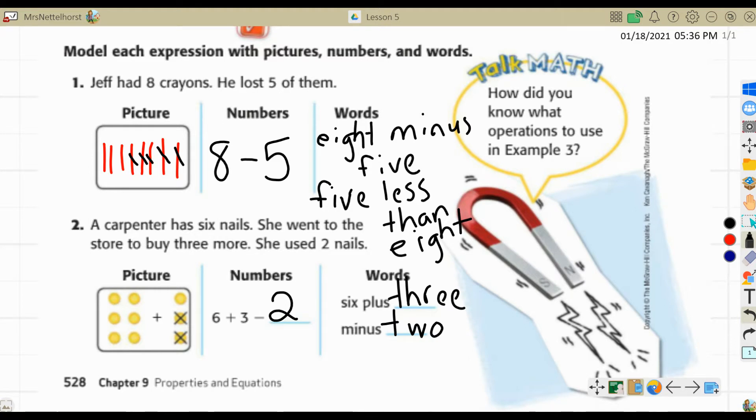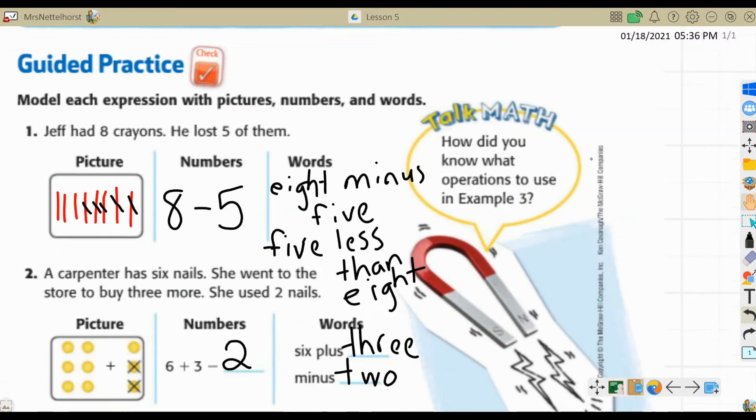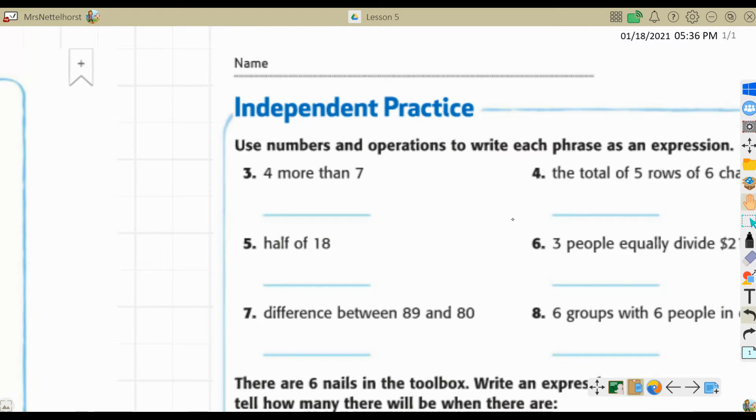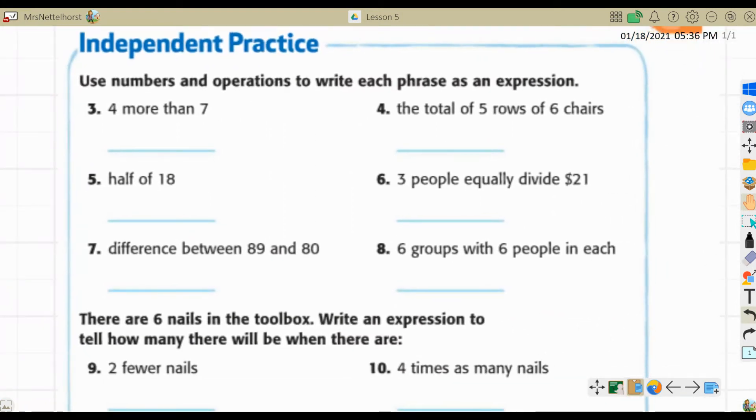Let's go on and look at independent practice. If you're not in my class, and you're not supposed to watch this part, you do not need to watch it. I mean, you can watch it if you want, but my class needs to watch it so you know what I expect of you. Use numbers and operations to write each phrase as an expression. That means there's no equal sign, and you're not going to have a product or a sum or anything like that. You're going to read it, and then you're going to decide what your operation symbol is and write it as an expression on the blue line. You are going to do that for all of these. Now they introduced some new words to you. I'm going to show you how to mark it up.